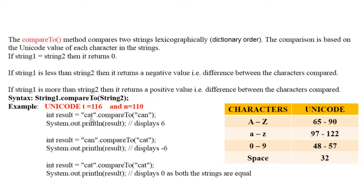Now let us compare lexicographically, character by character. You have 'c' for the first string and 'c' for the second string; 'a' and 'a'. Here it differs: 't' and 'n'. 't' has a Unicode value of 116 and 'n' has a Unicode value of 110. Since 116 is greater than 110, string one is greater, so it returns a positive value. 116 minus 110 gives 6, so result will print 6.